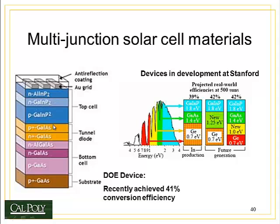Here's an example of a multi-junction solar cell developed by the Department of Energy. As you can see, it has aluminum indium phosphide, gallium indium phosphide, gallium indium arsenide, aluminum gallium indium arsenide, and gallium arsenide as the base materials. They are able to achieve efficiency as high as 41%, which is pretty remarkable compared to most other solar cell technologies.